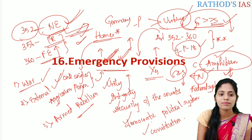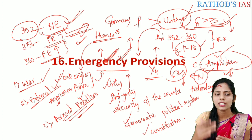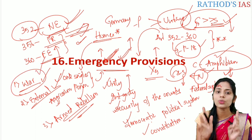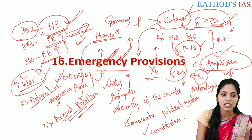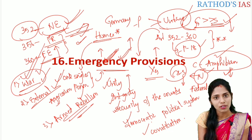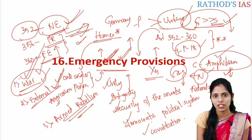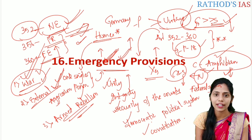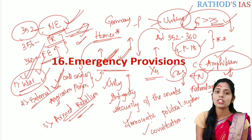Now let us understand the difference between war, external aggression, and armed rebellion. War means when two countries are fighting and they have formally announced that a war is happening between them. External aggression means the fighting happening between two countries but it is not formally or officially announced. Armed rebellion means the enemy is internal — the citizens of India themselves raise arms against the state. That situation is called armed rebellion.